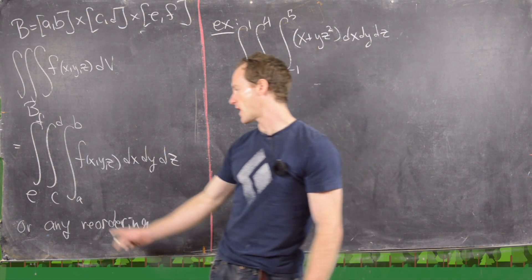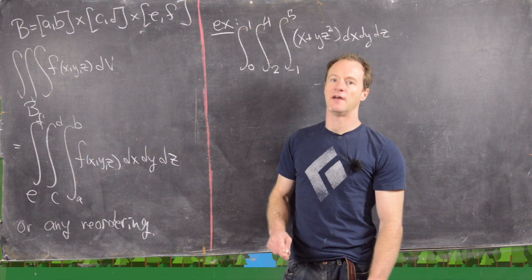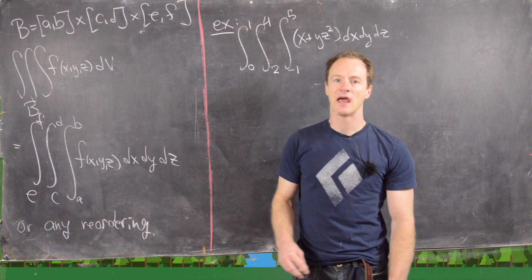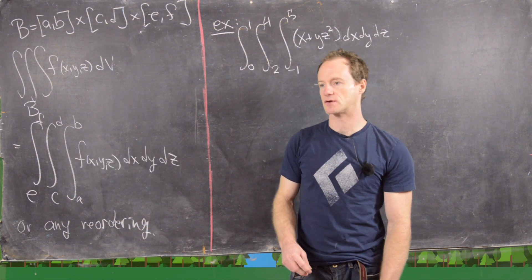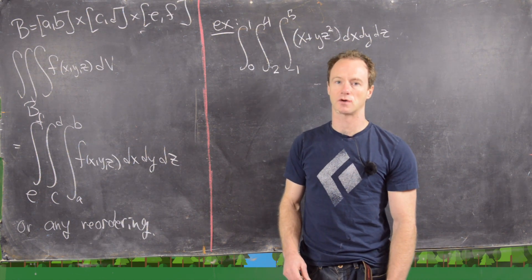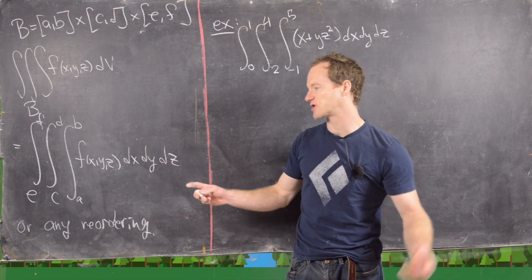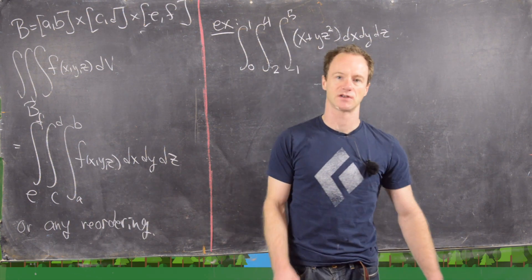So just think about it this way. There are three choices for the innermost integral, and then after you've made that choice, there are two choices for the middle integral, and then after you've made that choice, there's only a single choice for the outer integral. So it's three times two times one choices, so six total choices. So I'm not going to write them all down because it's essentially the same except for just changing dx with dy and so on and so forth.